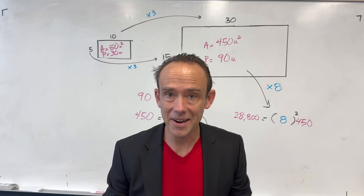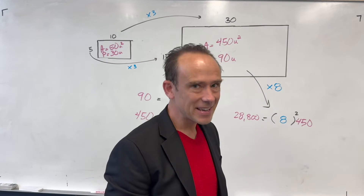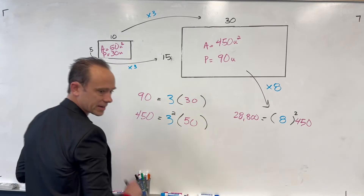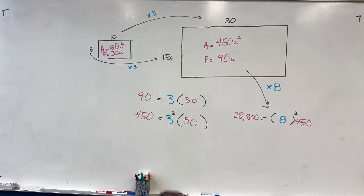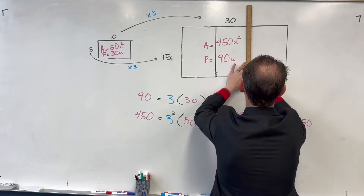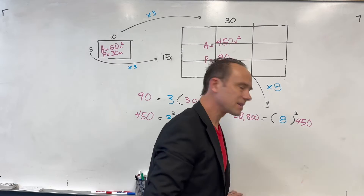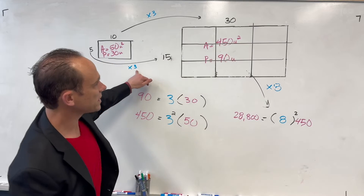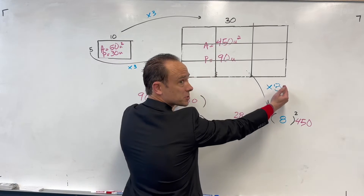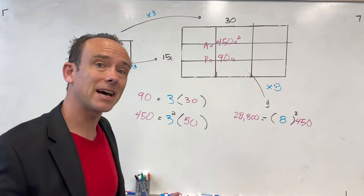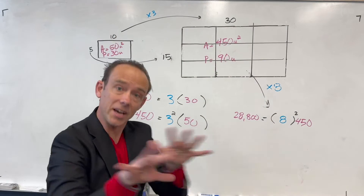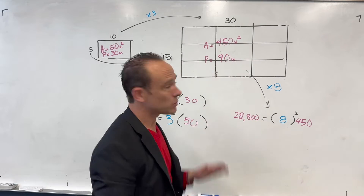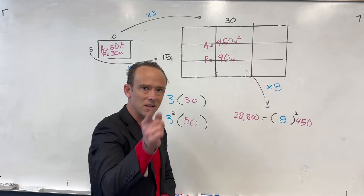Isn't geometry beautiful? Look at the scale factor of 3: it's 3 times as wide and 3 times as tall, so it's 9 times as big. The scale factor is 3, but the difference in areas is 9. That's the key geometric insight.